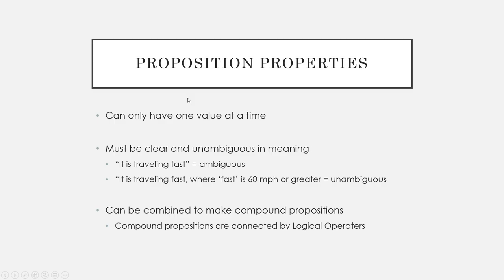Some properties of propositions: a proposition can only have one value at a time, and it must be clear and unambiguous in its meaning. For example, 'it is traveling fast' is a very ambiguous proposition — what is fast? We need to be more precise, such as 'it is traveling fast, where fast is 60 miles per hour or greater.' That's an unambiguous proposition. We can combine multiple propositions to make a compound proposition, which are connected by something called a logical operator.